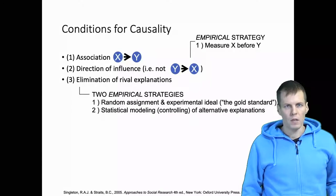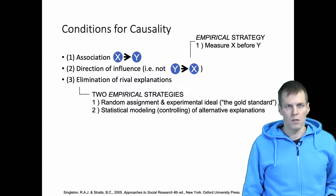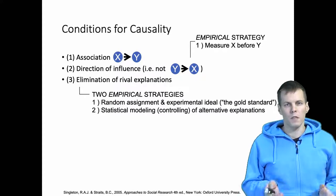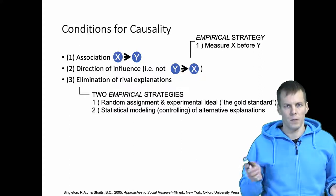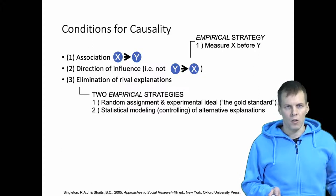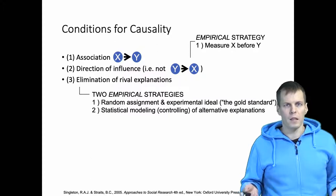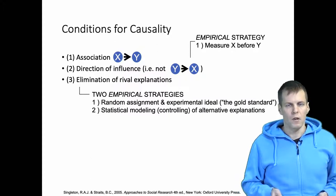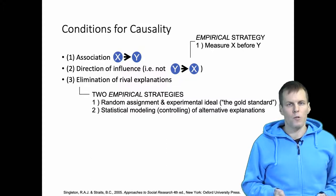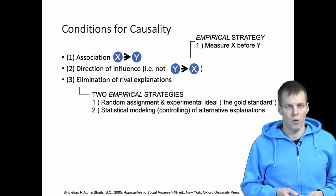When you make a causal claim using quantitative data, you have to demonstrate generally three conditions. First, you have to demonstrate that the cause X and the effect Y are associated. Then you have to demonstrate that the cause comes before the effect and not the other way around. And then you have to eliminate any rival explanations — for example, it could be that X and Y have a common cause and therefore they are correlated.